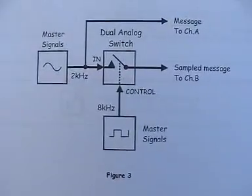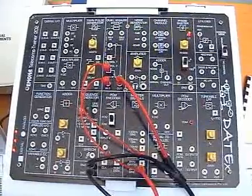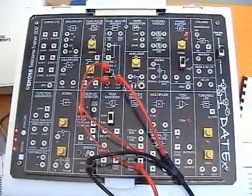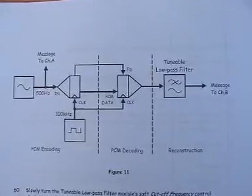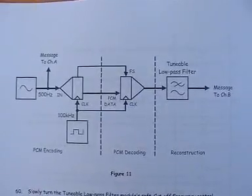Here is the block diagram for sampling. Here it is patched together on Datex, and here are some signals viewed on the NI-ELVIS scope.